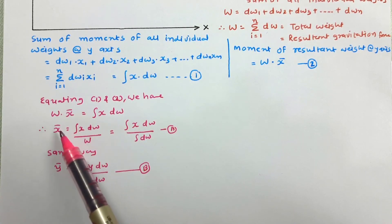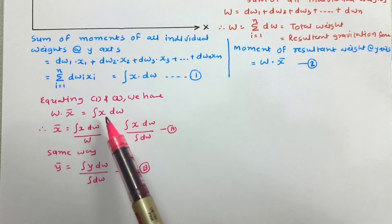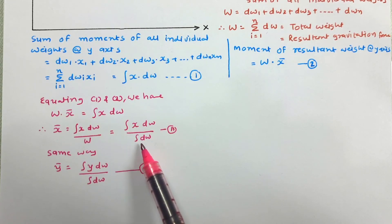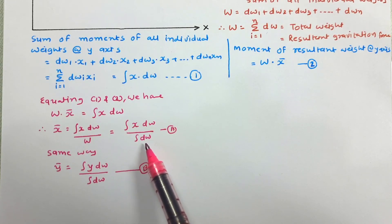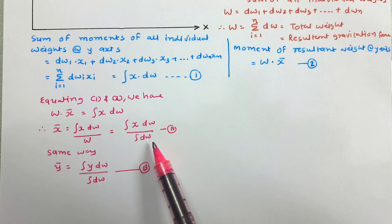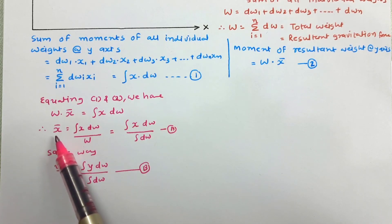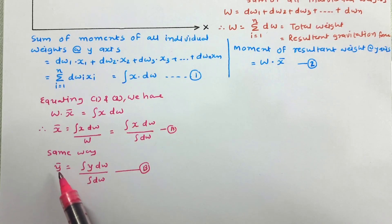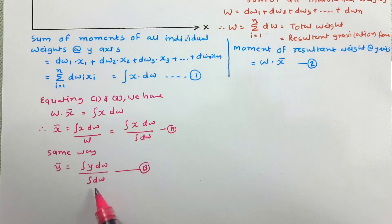Taking W to the other side, and writing W = ∫dw, we finally get the equation: x̄ = ∫x dw / ∫dw. Similarly, for ȳ we can write: ȳ = ∫y dw / ∫dw. This is the equation to determine the center of gravity of any body.